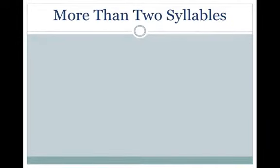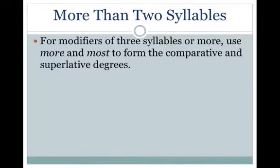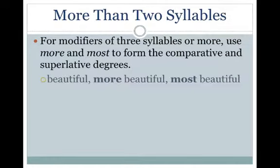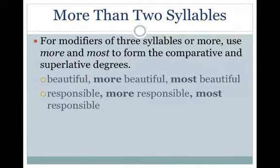More than two syllables: for modifiers of three syllables or more, use more and most to form the comparative and superlative degrees. For example: beautiful, more beautiful, most beautiful; responsible, more responsible, most responsible.